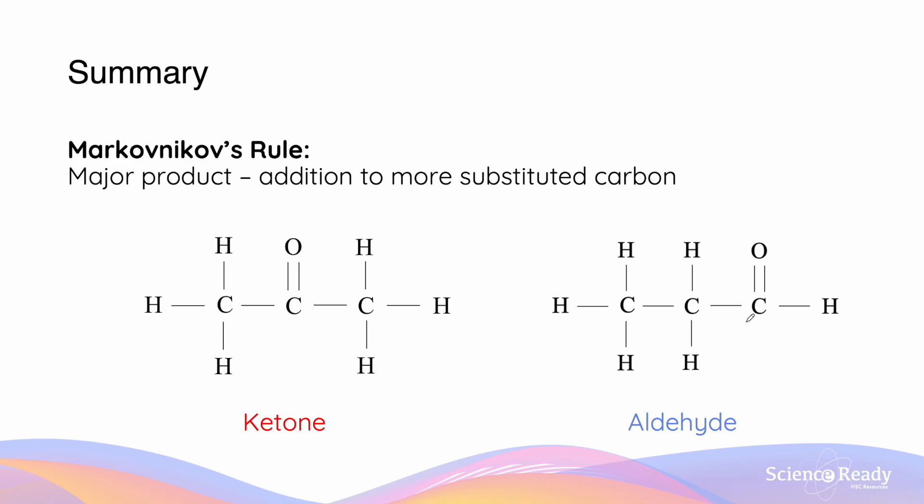However, with aldehyde, the carbon is only a primary carbon, as there is only one carbon that is attached next to it. As a result, we can expect that aldehyde will be the minor product, while ketones will be the major product.